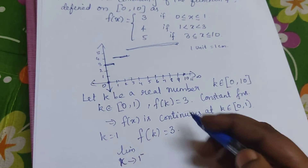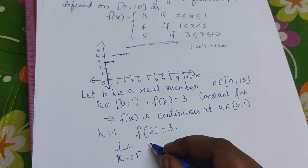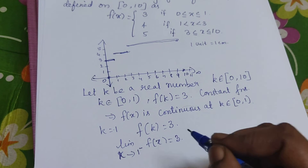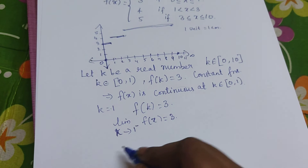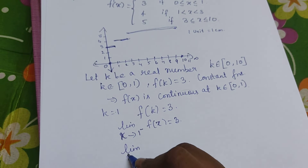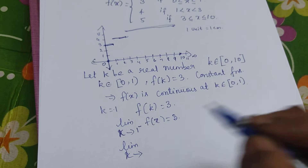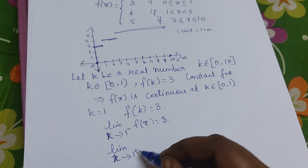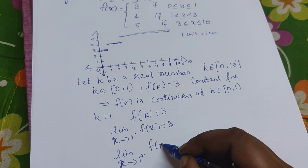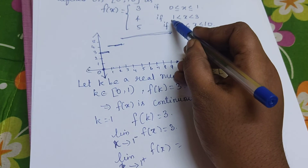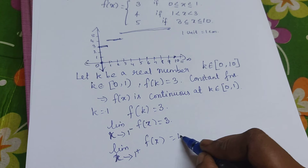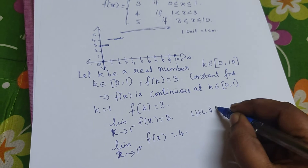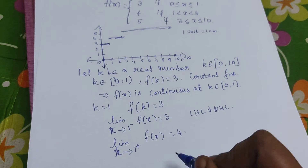Now we calculate the right-hand limit: limit as x tends to 1 from the right. In the right-hand neighborhood, the function value is 4. So the left-hand limit equals 3 and the right-hand limit equals 4. Since left-hand limit ≠ right-hand limit, the function is discontinuous at x = 1.